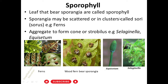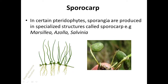Leaves that bear sporangia are called sporophylls. Sporangia may be scattered or in clusters called sori (plural: sorus). As in ferns, you can see that sporangia are clustered to form sori. The thin membrane covering over the sorus is called the indusium. Sporangia may also aggregate to form cones or strobili, as in Equisetum and Selaginella.